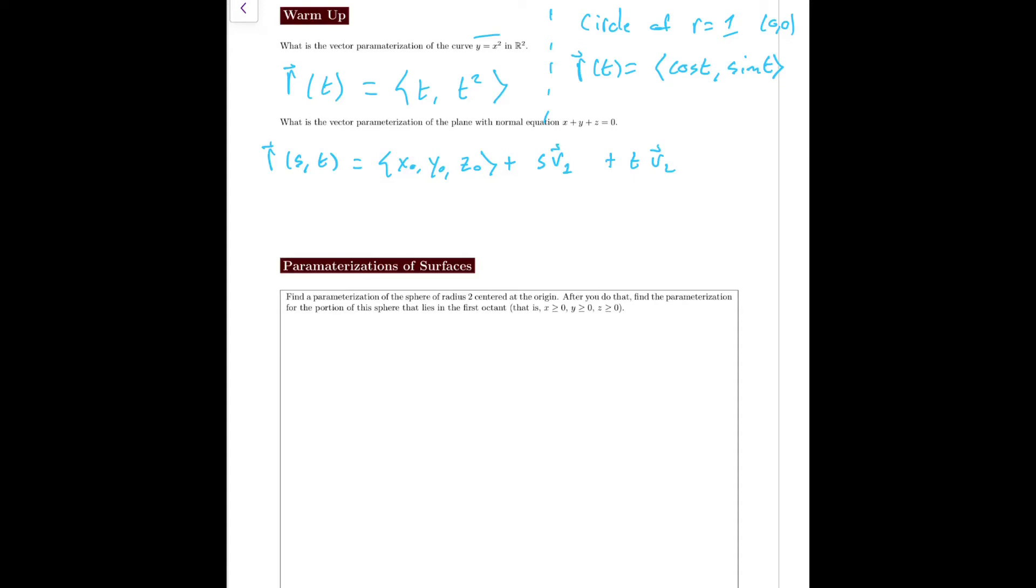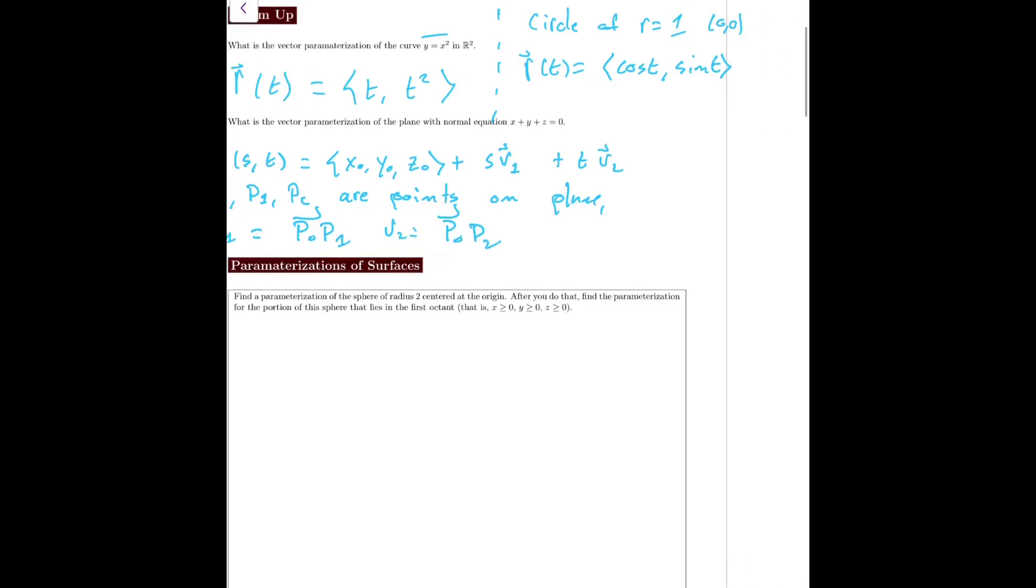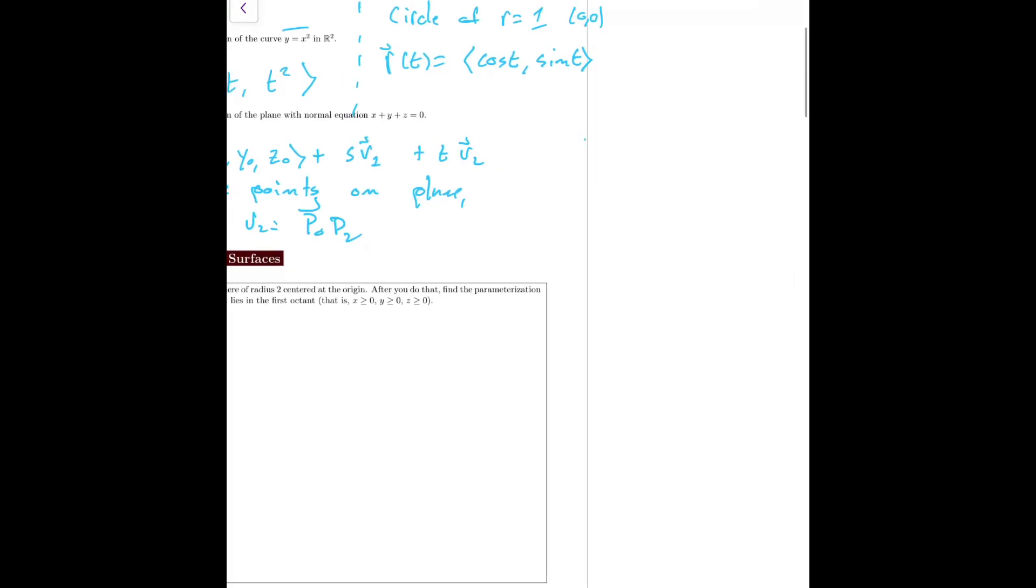Let's say that P₀, P₁, P₂ are points on the plane. Then we could say v₁ is equal to P₀P₁ and v₂ is equal to P₀P₂. So more explicitly, let's find three points that are on the plane. We know that the origin is on the plane—that satisfies the equation for the plane.